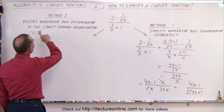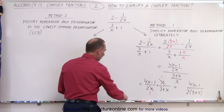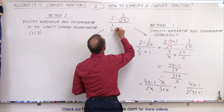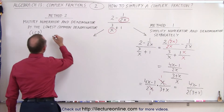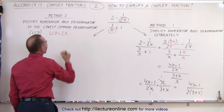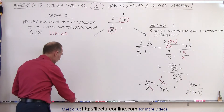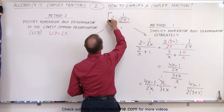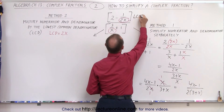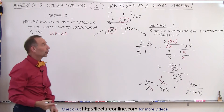Method 2 says that we're going to multiply the numerator and denominator by the lowest common denominator. So let's look at all our denominators. In our numerator, the denominator is 2x, and in the denominator, the denominator is x. So the lowest common denominator is going to be the largest of the two, which is 2x. The method tells us to multiply both the numerator and the denominator of the complex fraction by this LCD, which is 2x.